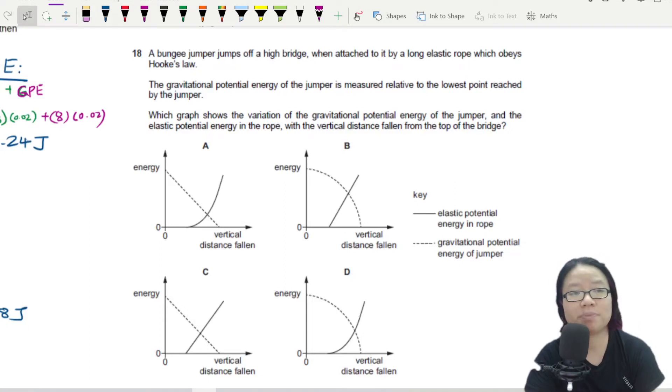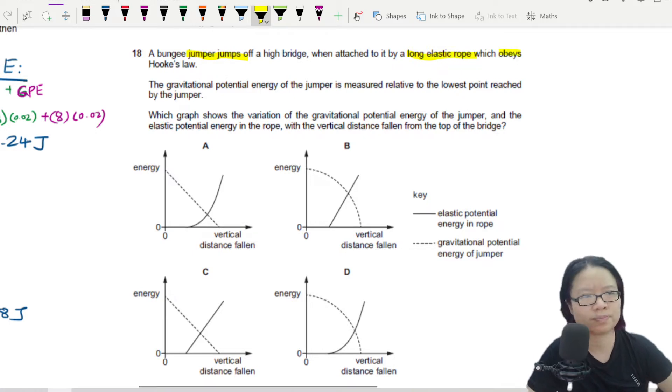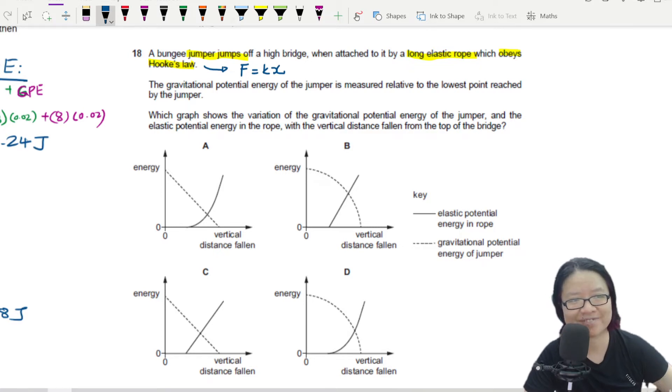A bungee jumper jumps off a high bridge when attached by a long elastic rope which obeys Hooke's law. So just a recap here, what is Hooke's law again? F is equal to Kx. You get that straight line graph.